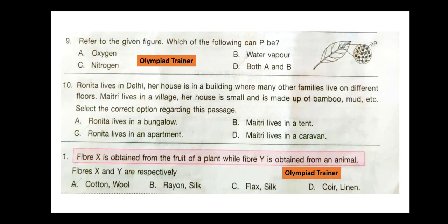Question 9. Refer to the given figure. Which of the following can P be? The correct answer is option D — both A and B, i.e. oxygen and water vapor.